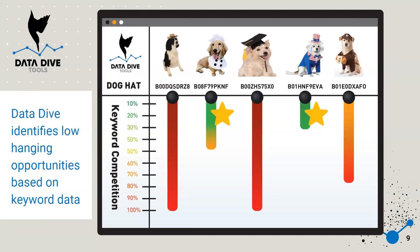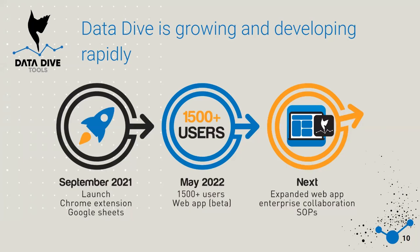Data Dive can be a little bit of a complex tool, so today we're going to walk through all of it. This is a slimmed-down version of what the UI looks like. Basically, Data Dive is helping you identify keyword competition — areas of keywords that have low competition and are low-hanging fruit — as well as identifying areas where people are doing really well and are very well indexed as Amazon sellers.